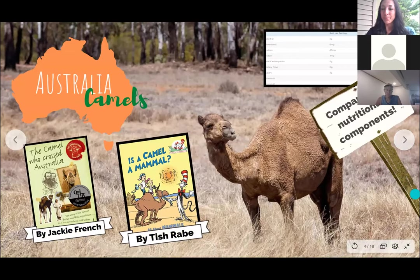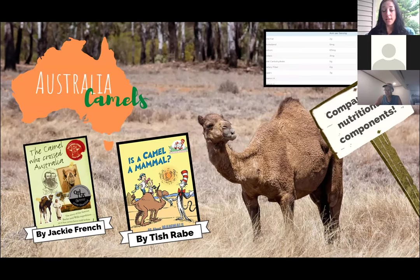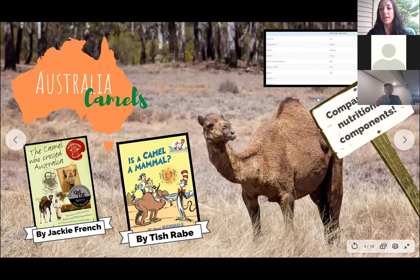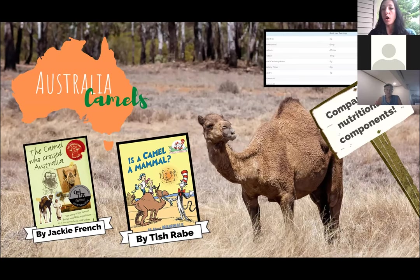Another dairy animal is a camel, which might be surprising to many students and maybe even many adults. We're focusing on Australia for this one — we have camel farms where they milk the camels and can use the milk to make many different dairy products. I have a little chart showing the nutritional values of camel milk. One activity you could do with your students is compare the nutritional value of milk from a camel versus a cow versus a goat — looking at the differences in protein, carbs, and fats.